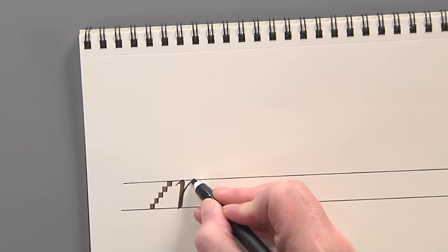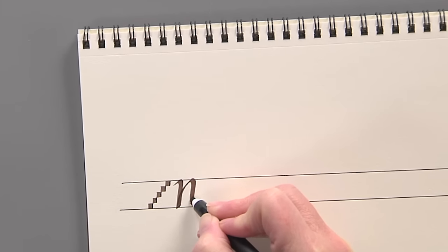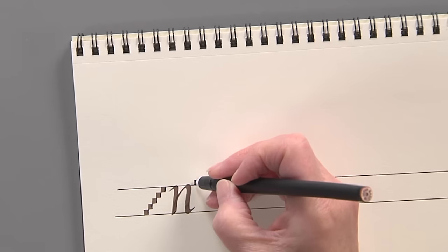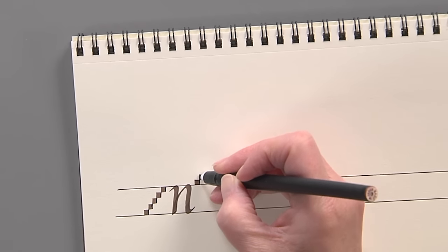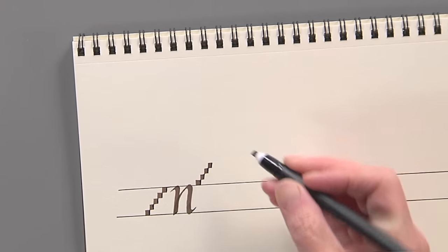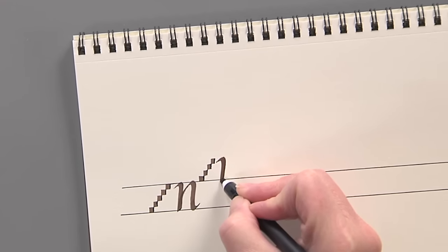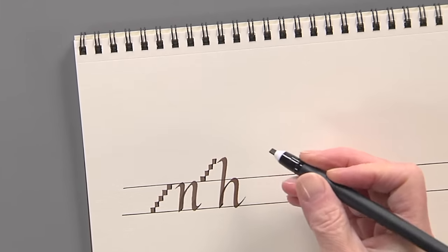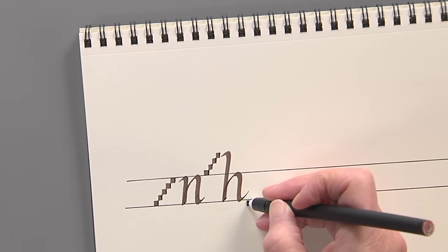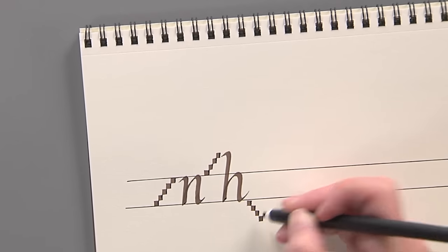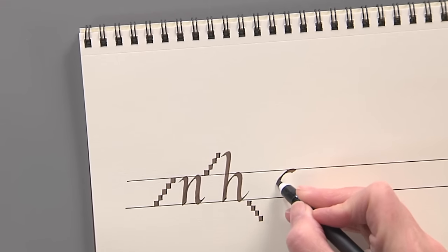In the italic alphabet, the ascending letters are three to four nib widths above the baseline. So the H would be here. And the descending letters are three to four nib widths below the baseline, so the G.